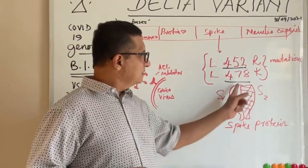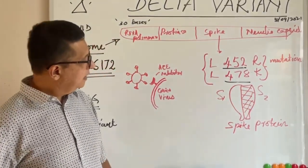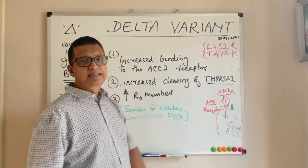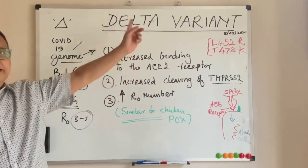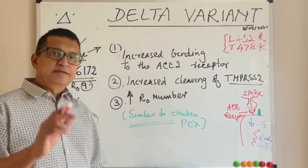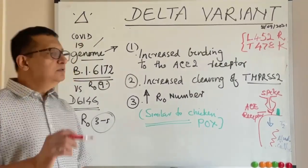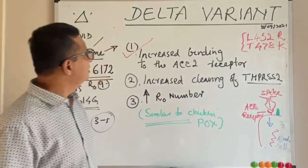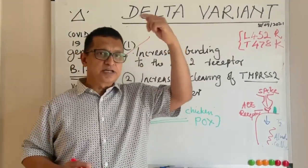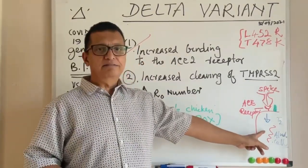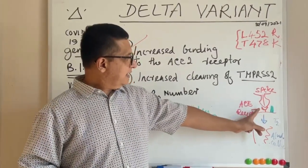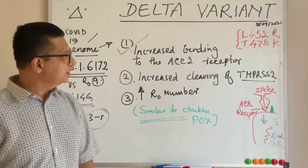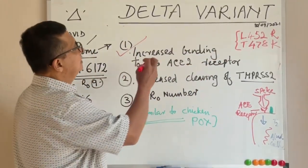This is the spike protein — here is the receptor binding domain and the S1 and S2 parts. As a result of these mutations in the spike protein, the delta variant dominated the whole world. The first factor is that when the virus enters the respiratory system and reaches the type 2 alveolar cell of the lung, the S2 receptor binding process with the spike protein is very quick.